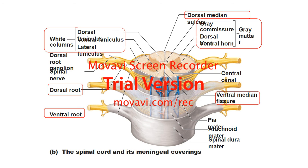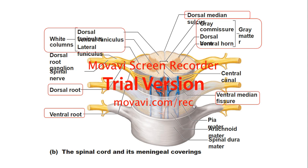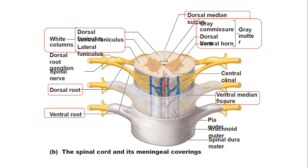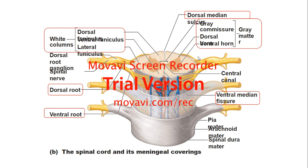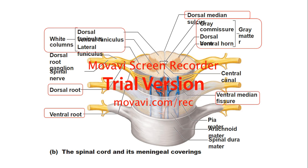In the diagram you can see the dorsal root, which has the neuron cell body, and the ventral root, which has the axons. You also see the ventral median fissure and the dorsal median sulcus — remember a fissure is just a deeper sulcus. The gray commissure — a commissure is just a meeting place of two bodies. As for the gray matter, you have the dorsal horn (back) and the ventral horn (front), and those are part of the gray matter.